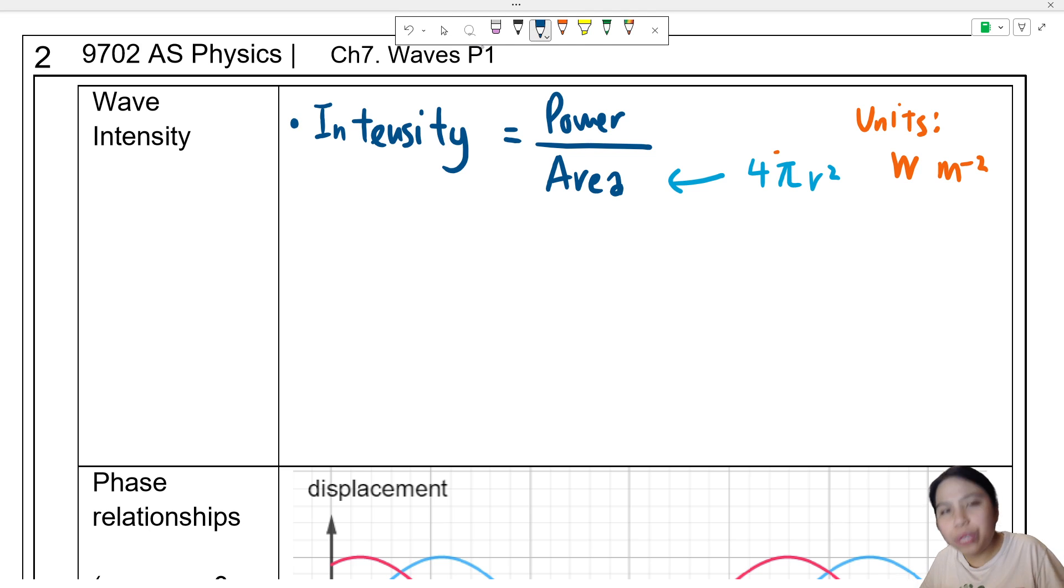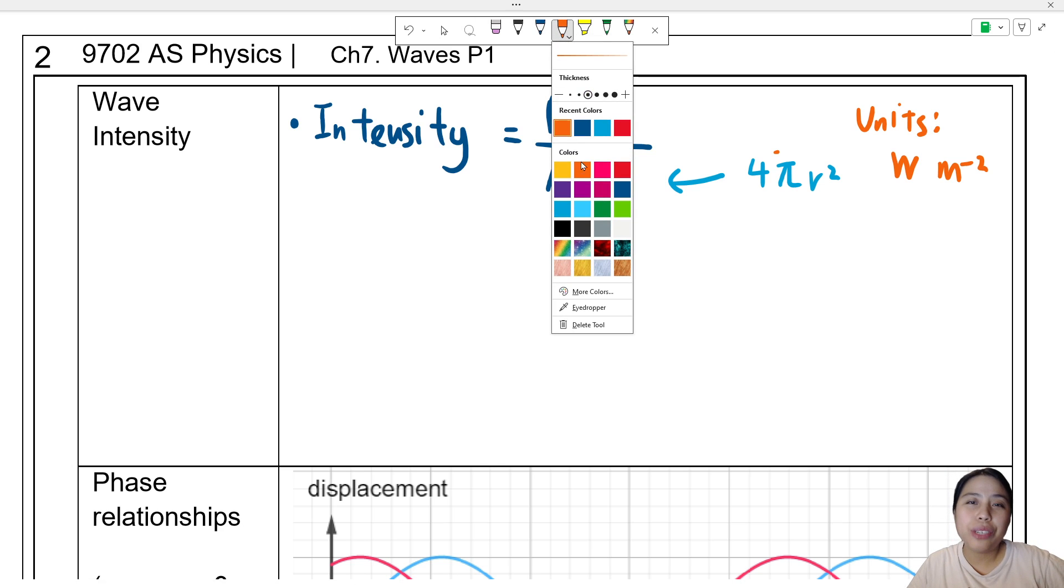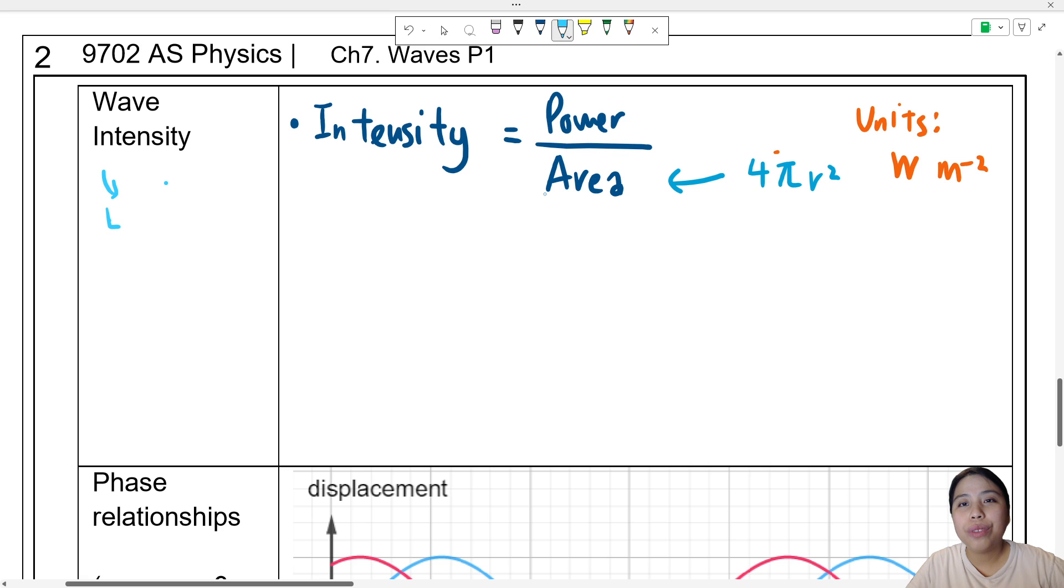Now if we go more into detail about intensity, actually intensity is measuring the energy of the wave, how much energy does it carry. And in waves, this energy is represented by the amplitude. How big is the oscillation?